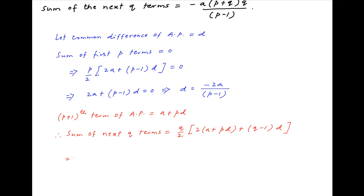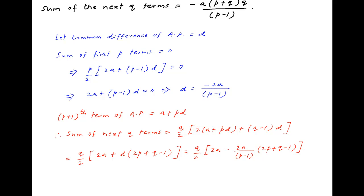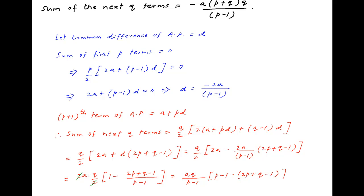This is equal to q upon 2 times (2a plus d times (2p plus q minus 1)). Putting in the value of d obtained above, we get q upon 2 times (2a minus 2a upon (p minus 1) times (2p plus q minus 1)). This is equal to 2a times (p minus 1) minus 2a times (2p plus q minus 1), all over (p minus 1), giving aq upon (p minus 1) multiplied by ((p minus 1) minus (2p plus q minus 1)).